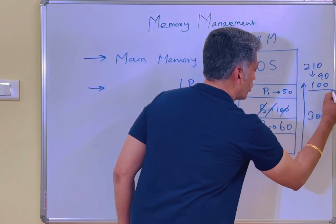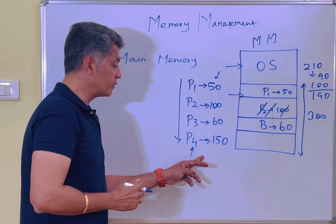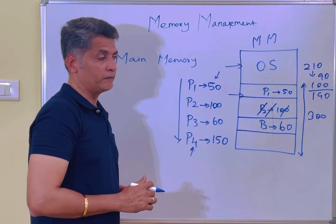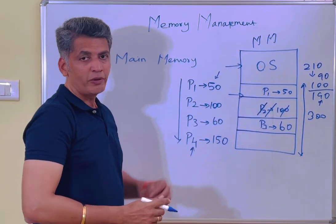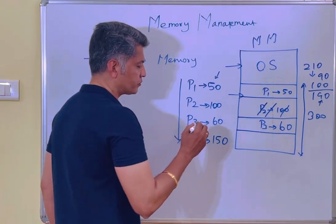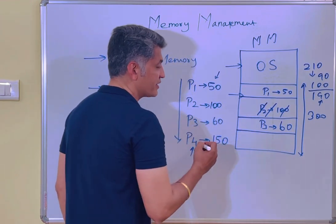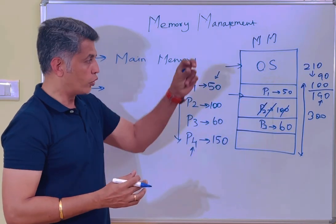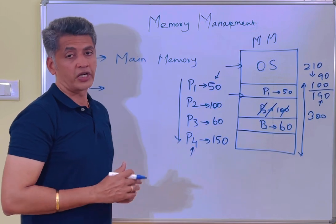Now a total of 190 locations are free. Process 4 requires 150 locations, and 190 can accommodate 150. But the problem is that process execution requires contiguous memory — the memory needs to be continuous. Location 12 through location 150 need to be continuous. This is the requirement.